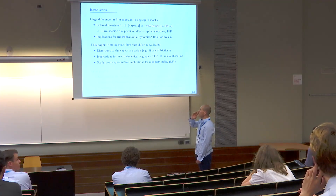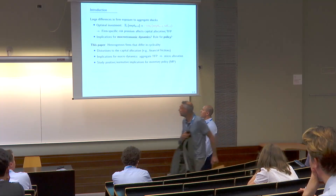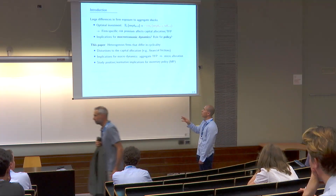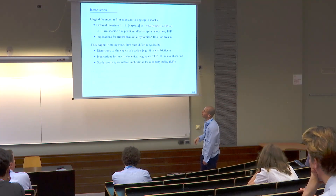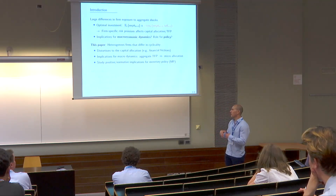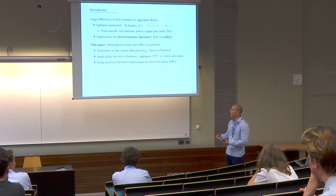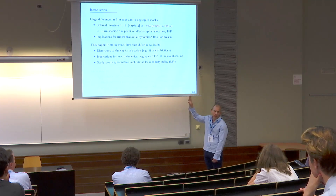Guided by those patterns, we augment a standard New Keynesian business cycle model with two key features. First is a cross-section of heterogeneous firms that differ in cyclicality, just as shown. Second is a class of flexible distortions to the capital allocation — taking a cue from the misallocation literature — and you can think about these as different types of financial frictions.